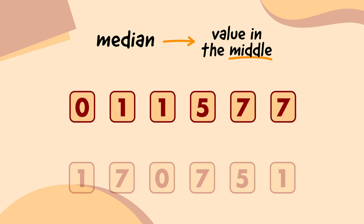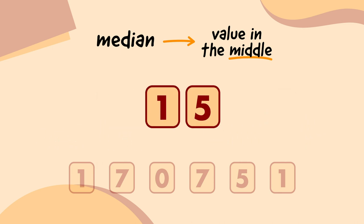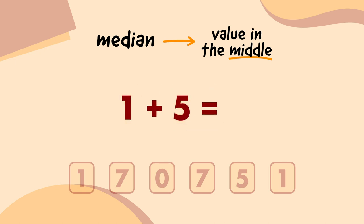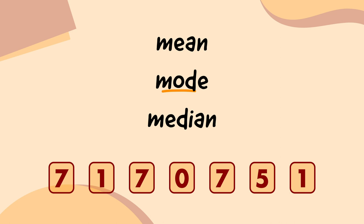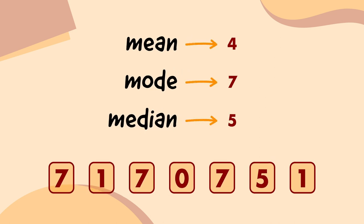If you have an even number of values, you count inwards from both sides to find the two values in the middle. Then you add them together and divide the total by 2. So here, the two values in the middle are 1 and 5, so we do 1 plus 5, which equals 6. Then we divide 6 by 2, which gives us a median of 3. So we've got the mean, the mode, and the median. And with the exact same data, we can get three different average values just by using different ways of calculating it. That's why the drinks companies might not be lying.